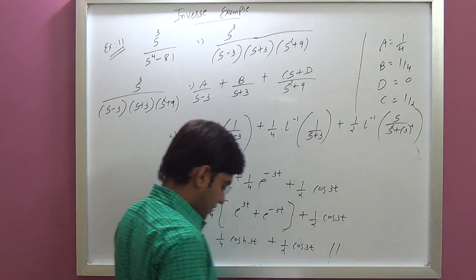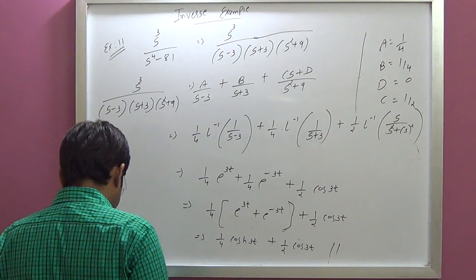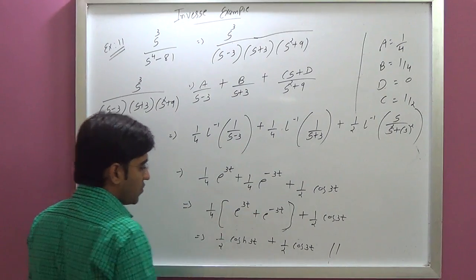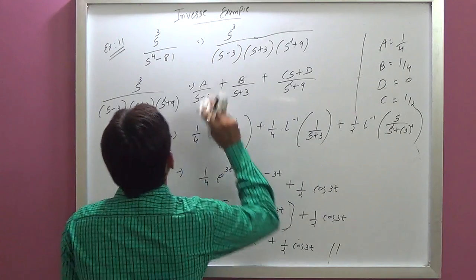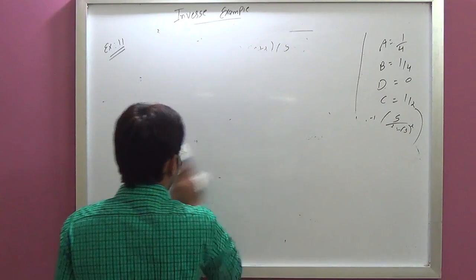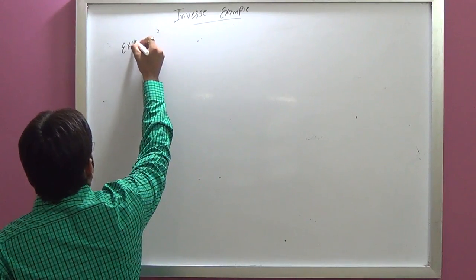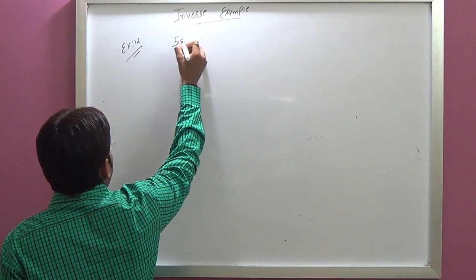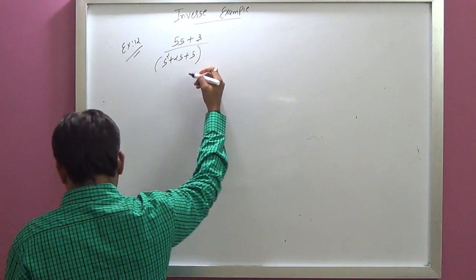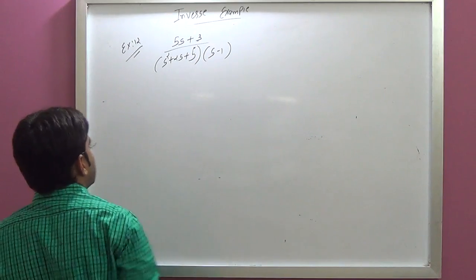This is your final answer: (1/4)(e^(3t) + e^(-3t)) plus (1/2)cos(3t), which simplifies using the hyperbolic formula. Now, Example 12: we have (5S plus 3) upon (S squared plus 2S plus 5)(S minus 1).